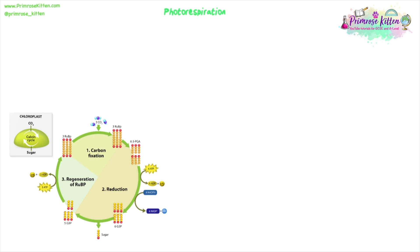We're going to have a quick look at photorespiration and some alternative types of photosynthesis that plants have adapted to overcome this. If you need this for your spec, this will be very useful. If not, it's a good bit of extra reading as well. Normal photosynthesis is actually a bit inefficient in most plants, and this is because of rubisco.